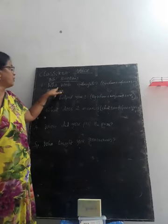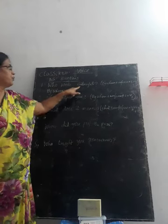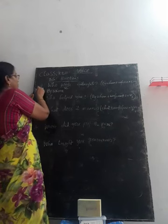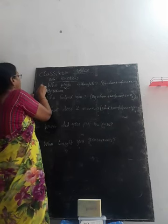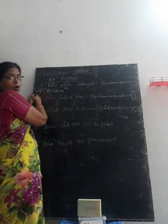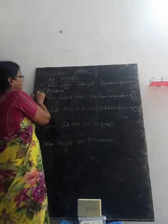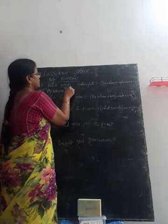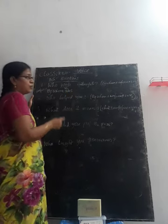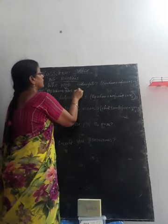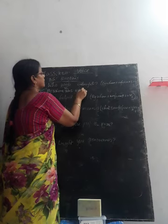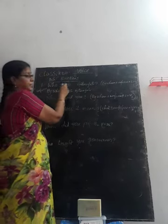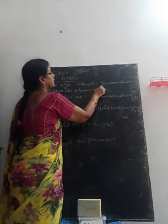BY WHOM — the question is 'who wrote Geetanjali?' Wrote is V2, so we have to use past tense B forms: WAS or WERE. We have to select one. Geetanjali is singular, so we write WAS. BY WHOM WAS Geetanjali — subject — and V3. Write, wrote, written. BY WHOM WAS Geetanjali written.